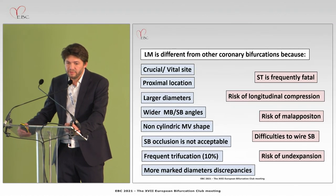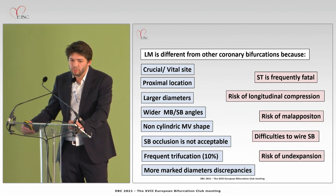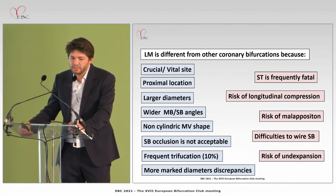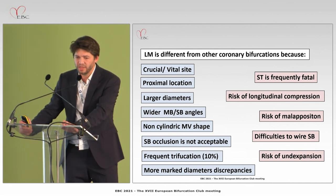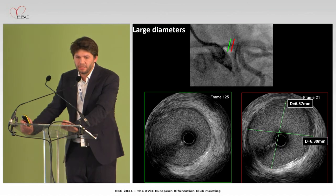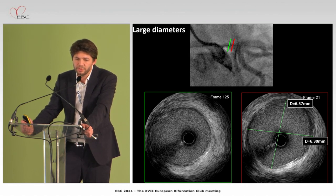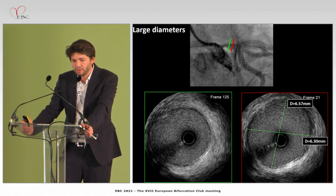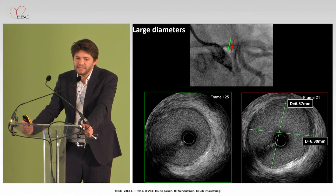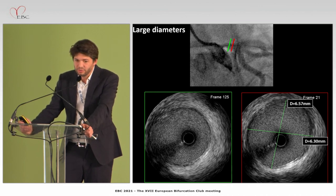These very special features involve different risks of complications that we have to overcome while performing a PCI. For example, this was an ostio left main tight stenosis that appeared after cardiac surgery. When we had to fix this ostio left main, we observed that the left main was extremely large, and the distal landing zone displayed a diameter of more than 6.3 millimeters, which required a very large stent to get a correct result — quite a challenge.